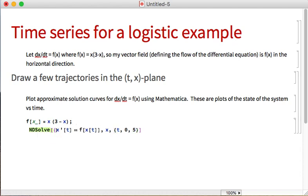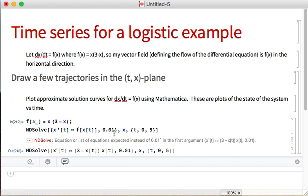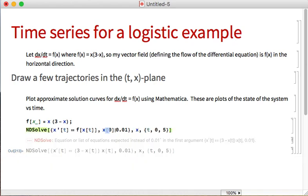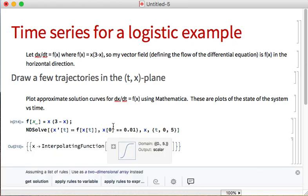I'm forgetting that I need to give Mathematica an initial condition for it to make an approximate solution curve. Each approximate solution curve corresponds to a different initial condition. x of 0 equals 0.01.